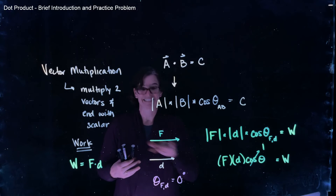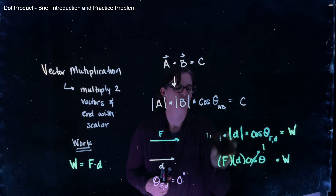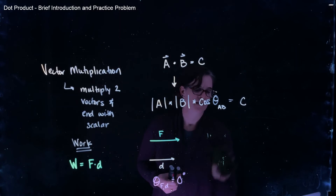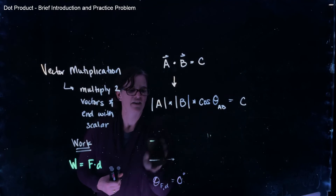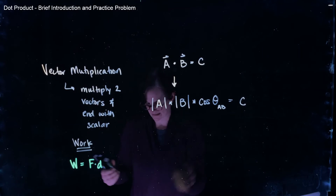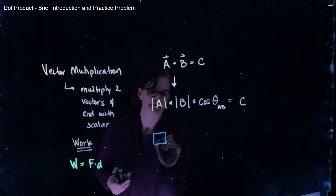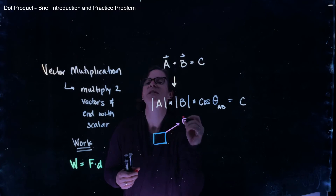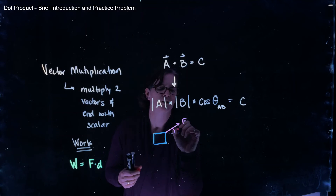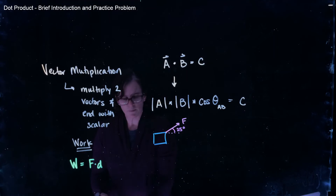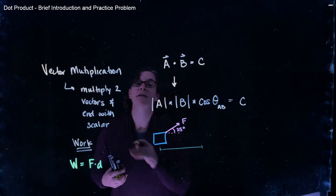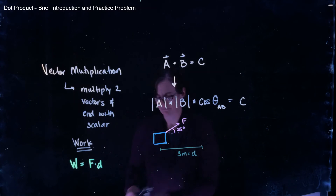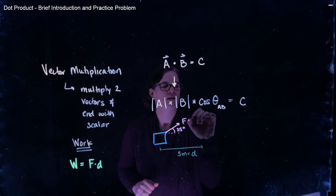What if the angle isn't zero or 180 degrees — if it's not in the same dimension? That's where the angle between the two vectors comes into play. Let's imagine I have a box and I am pulling the box along by a rope that's angled up and to the right at 25 degrees, pulling that box through a horizontal displacement of three meters, with a force equal to five newtons.